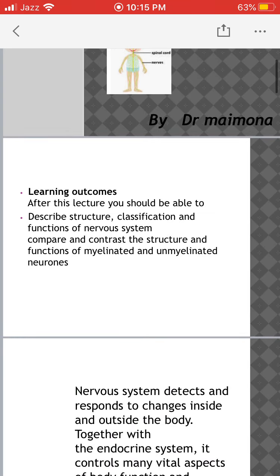The learning outcomes after the completion of this lecture: all of you should be able to describe the structure, classification, and function of the nervous system, as well as compare and contrast the structure and functions of myelinated and unmyelinated neurons.